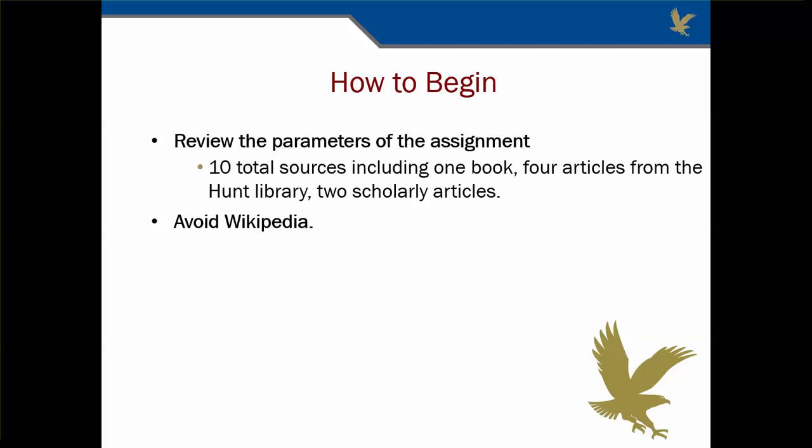In order to find sources for your annotated bibliography, make sure you review the instructor's specific requirements for the assignment. In Research 202, you are usually instructed to find ten total sources, including one book, four articles from the Hunt Library databases, and at least two scholarly articles. Make sure you avoid Wikipedia for this and any other academic assignment. While there can be useful information in a Wikipedia article, the quality of most articles cannot be verified sufficiently for formal research.